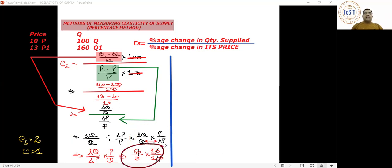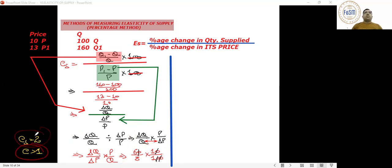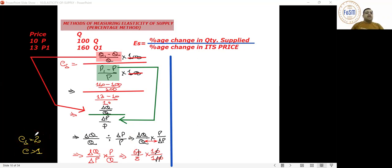Substituting the values as per the formula, the resultant elasticity is equal to 2, that is more than 1. Since it is more than 1, it is more elastic: price change is 30% but quantity change is 60%.